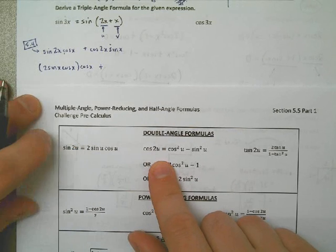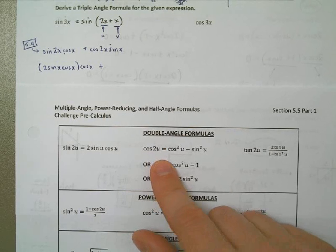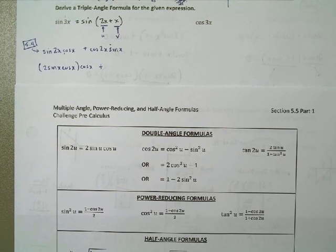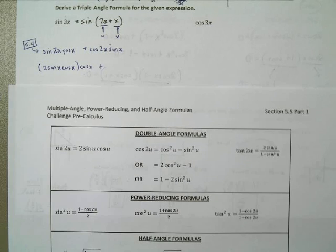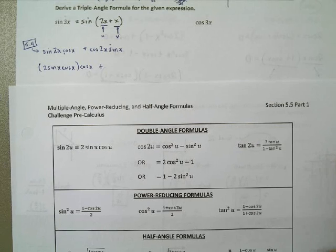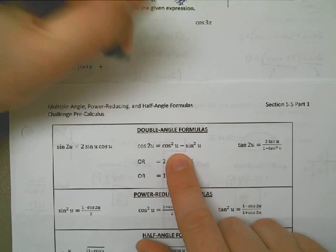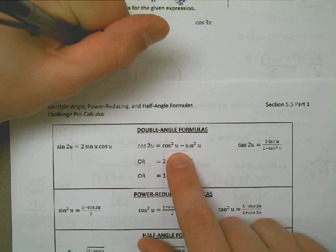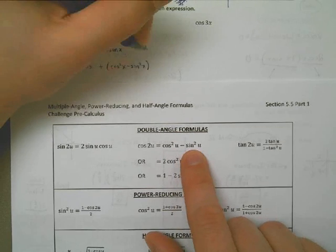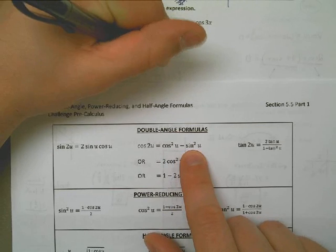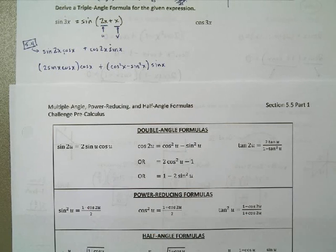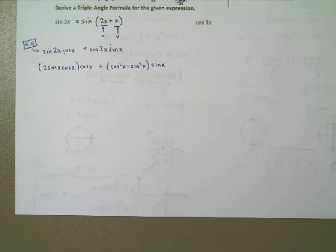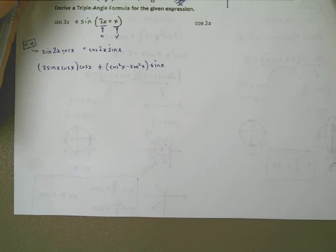I'm not really sure which formula to use for cosine of 2x — I've got three different choices here. Let's just use the top one. It doesn't really matter. So I'm going to replace cosine of 2x with cosine squared minus sine squared, and multiply that times sine x, which is off at the end. Now we just need to simplify this as much as possible — nothing new here except for simplification.